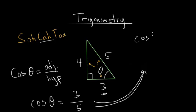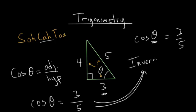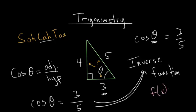The question is, how do we solve for the angle here? To do this, we need to introduce the idea of an inverse function — more specifically, the inverse cosine function. The general idea is that if you have a function and you put it inside the inverse of that function, then what you get back is whatever your independent variable is, so x in this case.